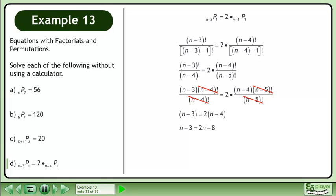Expand. Isolate n. Divide both sides by negative 1 to get the answer, n equals 5.